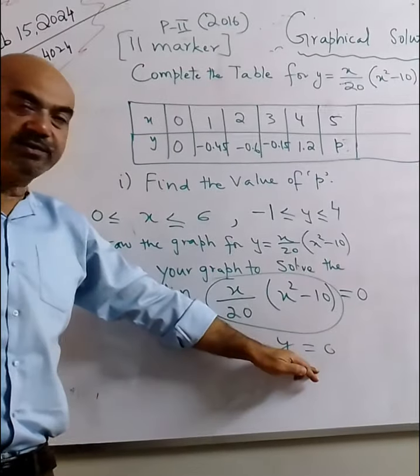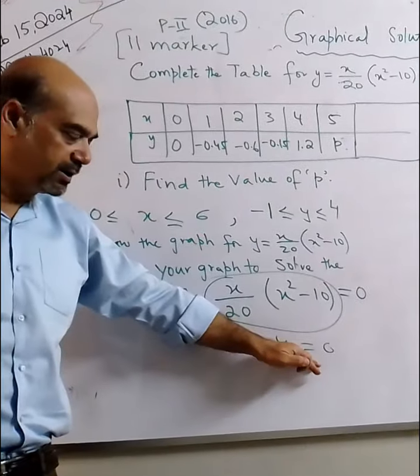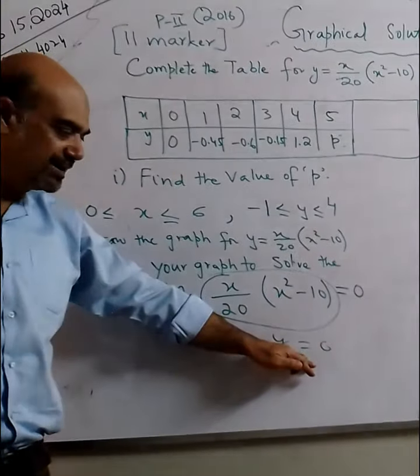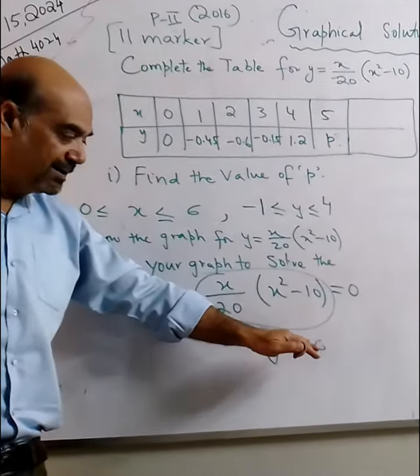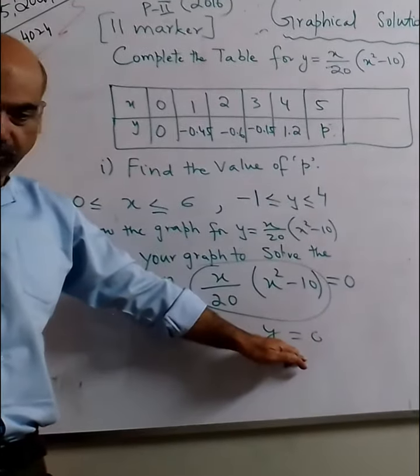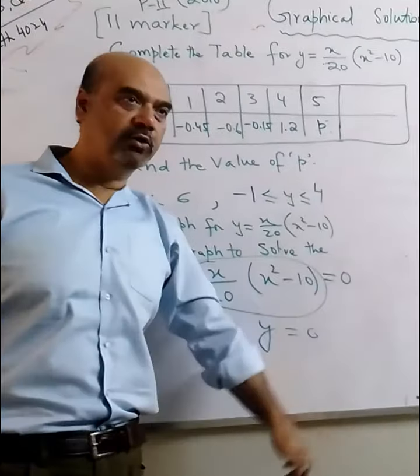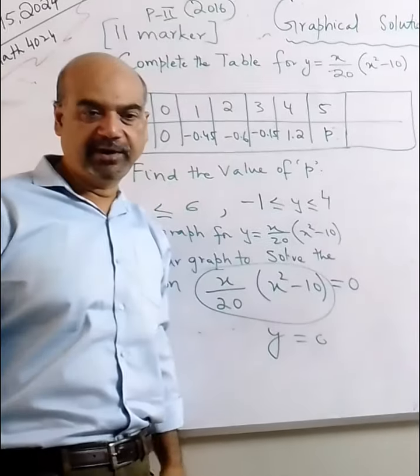y equals to 0 means that the graph or the curve is going to intersect the x-axis. Which axis? x-axis. And that x-axis value, point of intersection, will be your answer. See?